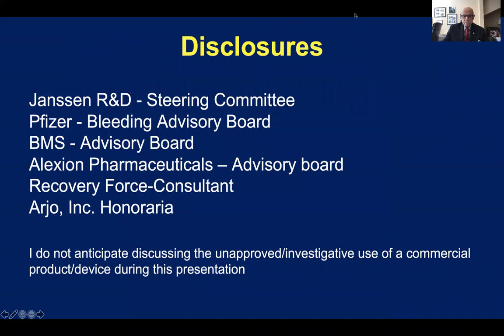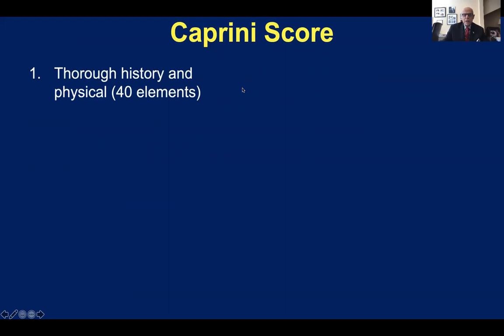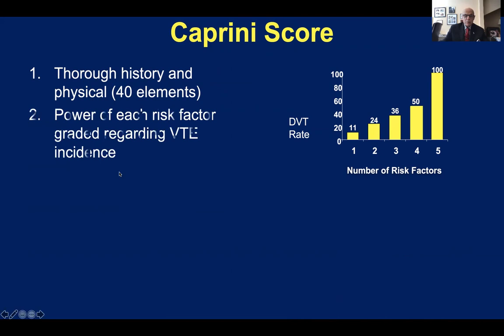Here are my disclosures. We use the Caprini score because it's the most comprehensive history and physical available that's been widely tested around the world in surgical patients and in medical patients too. It consists of 40 elements, and we know that as the number of risk factors increases, the incidence of venous thromboembolism goes up.